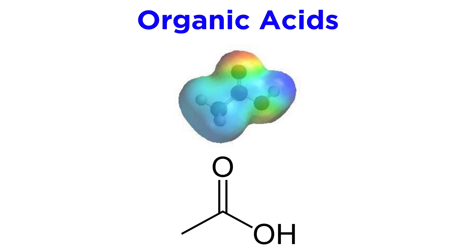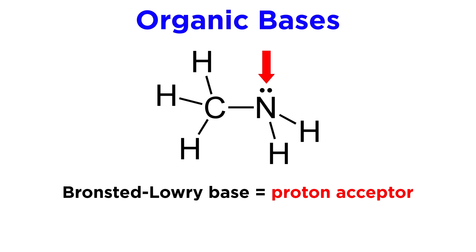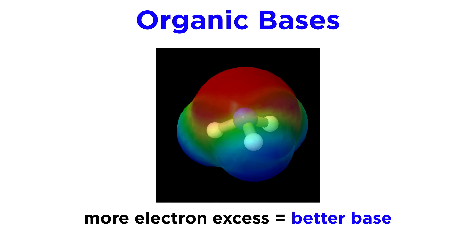Carboxylic acids are extremely common organic acids, especially in a biological context, so we will see these many times. Moving on to organic bases — again these will be carbon-based. As we know, a Bronsted-Lowry base is a proton acceptor, and the greater the electron excess at a particular site, the better of a base it will be. So in terms of electron density maps, now we will be looking for the reddest regions, since these denote electron excess.